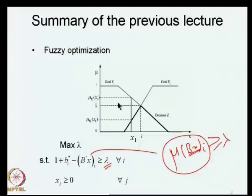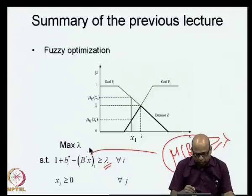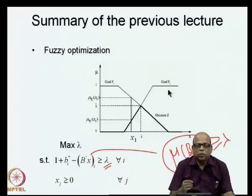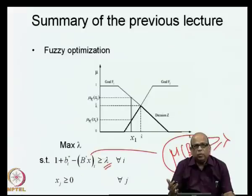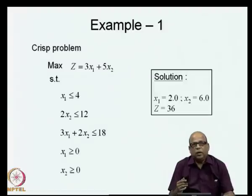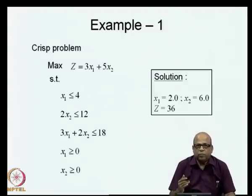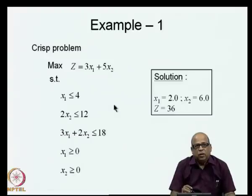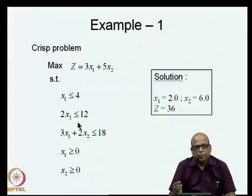That is the max-min type of problem. We will now take a simple crisp linear programming problem. The types of problems we are addressing are fuzzy linear programming problems, because we are using linear membership functions and introducing non-negativity conditions. We will take a crisp problem solved earlier in the linear programming case—a simple two-variable problem with simple constraints that can also be solved using the graphical method.